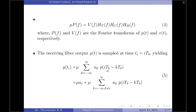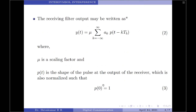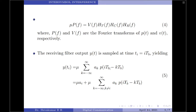When k equals i, p(i*TB minus k*TB) becomes p(0) which equals 1, so this term reduces to mu times Ai. For all other values of k not equal to i, the summation term is retained. In equation 5, the first term, mu times Ai, is produced by the i-th transmitted bit. The second term represents the residual effect of all other transmitted bits on the decoding of the i-th bit. This residual effect is called inter-symbol interference.